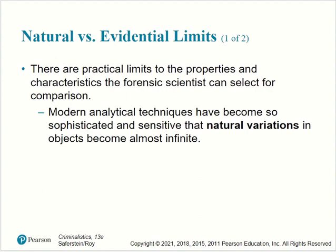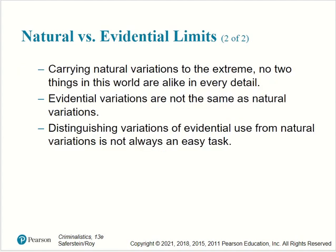Natural versus evidential limits: there are practical limits to the properties and characteristics the forensic scientist can select for comparison. Modern analytical techniques have become so sophisticated and sensitive that natural variations in objects become almost infinite. Carrying natural variations to the extreme, no two things in the world are alike in every detail. Evidential variations are not the same as natural variations, and distinguishing variations of evidential use from natural variations is not always an easy task.